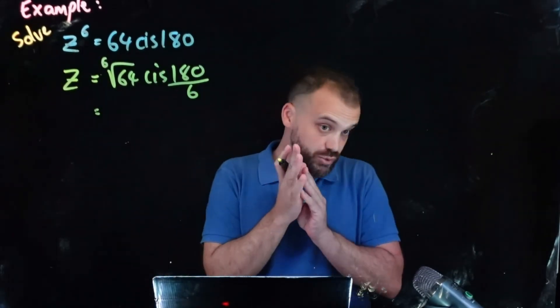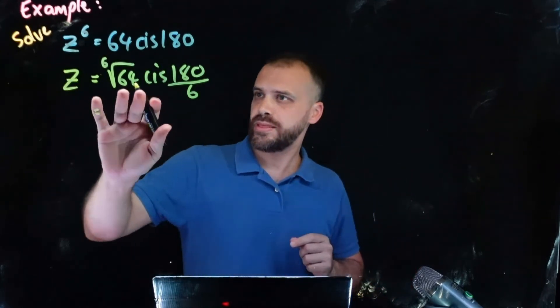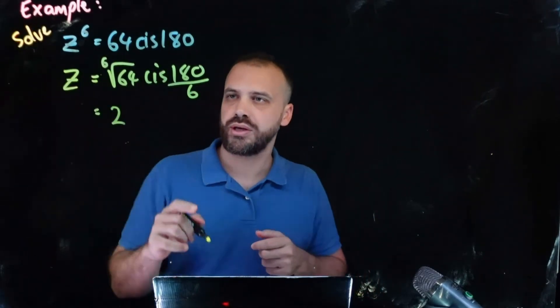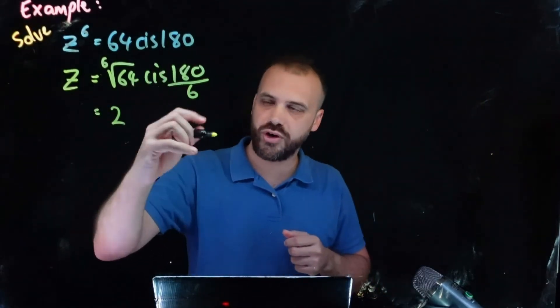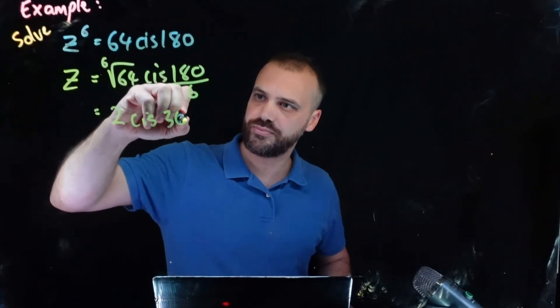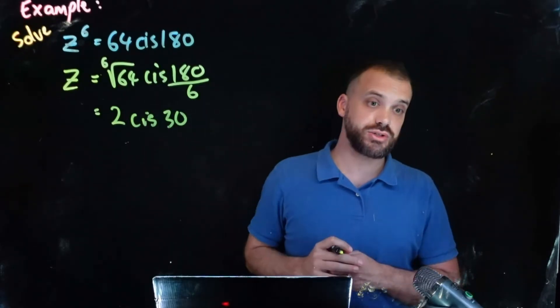Now this is only going to give us one answer. We need 6 but let's get our one answer first. The 6th root of 64 is 2 and cis 180 divided by 6 is cis 30. Okay one of our answers is 2 cis 30.